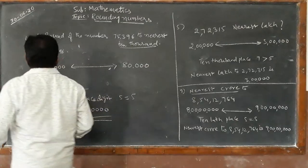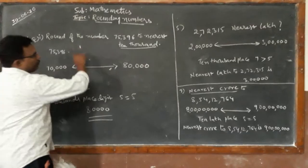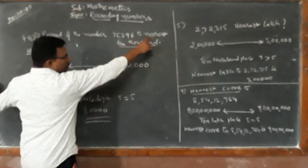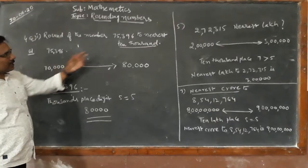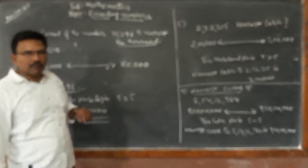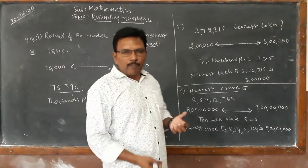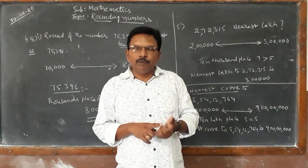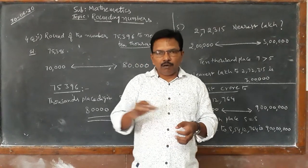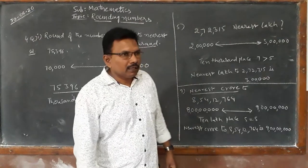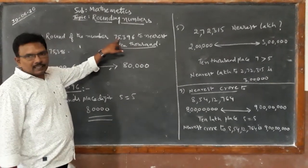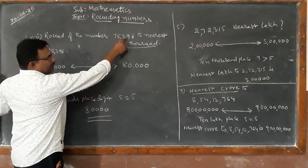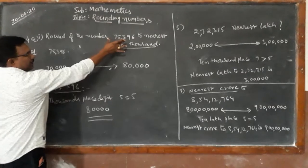Question number four: round the number 75,396 to the nearest ten thousand. What are the ten thousands? Ten thousand, twenty thousand, thirty thousand, forty thousand, fifty thousand, sixty thousand — these are all called ten thousands. Now, for which ten thousand is this number nearest?